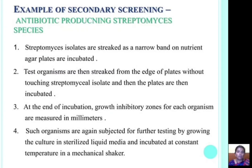An example of secondary screening involves antibiotic-producing Streptomyces species. Streptomyces isolates are streaked as a narrow band on nutrition agar plates and incubated at 37 degrees Celsius for 24 hours. Test organisms are then streaked from the edge of the plates without touching the Streptomyces isolates, and plates are incubated again at 37 degrees Celsius for 24 hours. At the end of incubation, growth inhibitory zones for each organism are measured in millimeters. Some organisms are further tested by growing the culture in sterilized liquid media and incubating at constant temperature in a mechanical shaker.